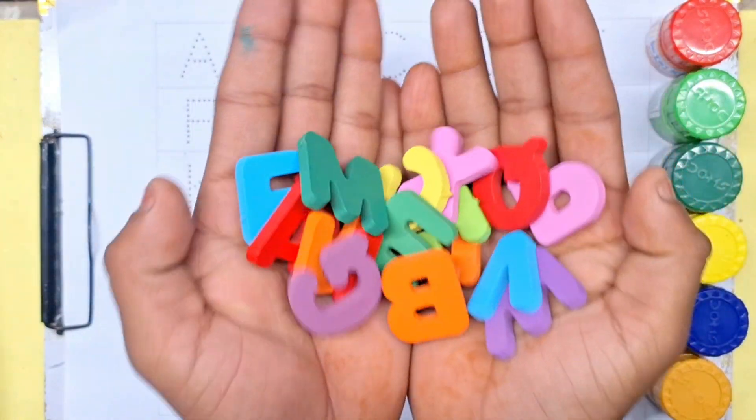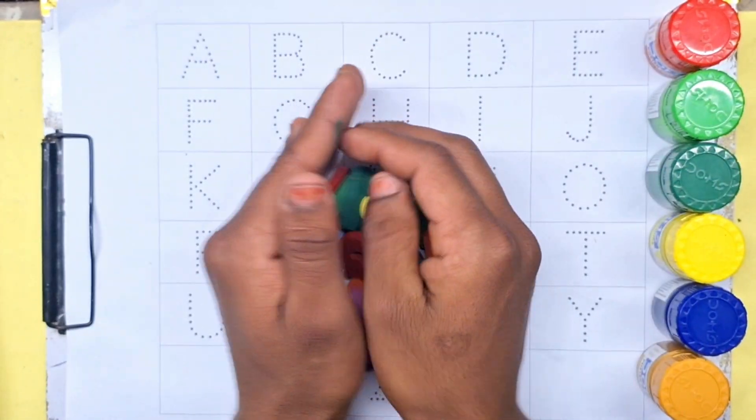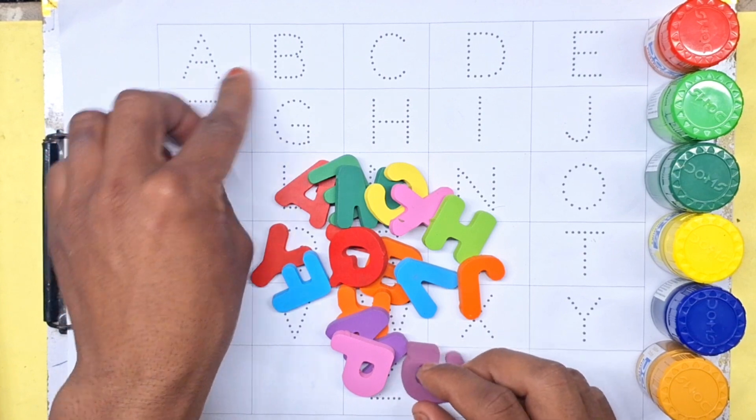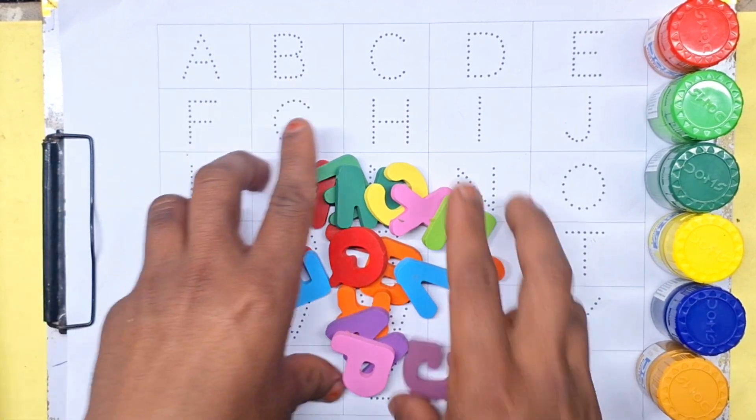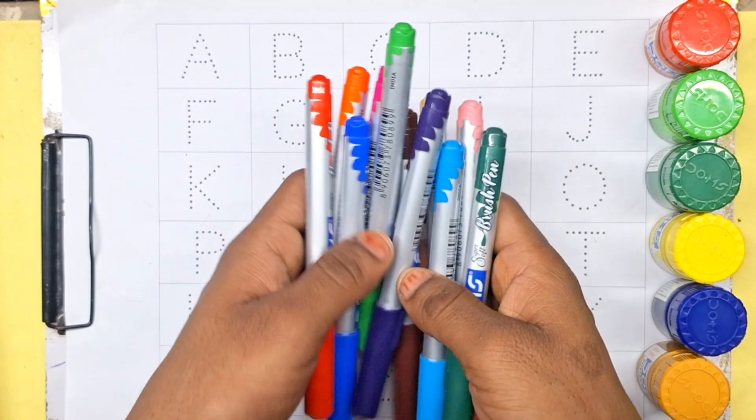Hello kids, let's learn alphabet. A for apple and B for ball. Let's learn color names.